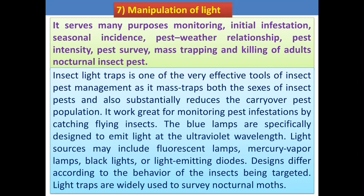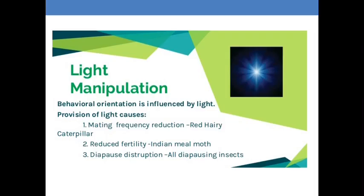The light trap helps attract both sexes of nocturnal insects. There are a number of light sources we can use — fluorescent lamps attract different pest populations during night hours. There is also a yellow color lamp that increases the temperature of the surrounding area; when insects are attracted toward the fluorescent bulb, due to the high temperature they drop down into bags present at the bottom. The main purposes of light manipulation in pest management are: mating frequency reduction in the red hairy caterpillar, reducing fertility in the Indian meal moth, and diapause destruction in all diapausing insects.